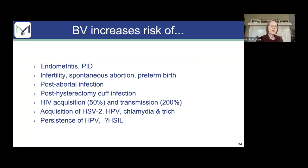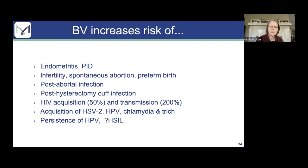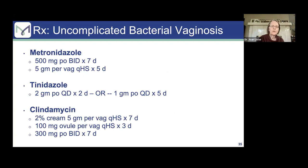BV is a nasty infection because it has a bad impact on lots of GYN conditions. It is associated with PID and endometritis. It causes increased infertility, spontaneous abortion, and preterm birth. It causes infections after abortion, after D&C, after hysterectomy, and it increases the risk of acquiring HIV — transmission is way up. The acquisition of herpes, HPV, chlamydia, and trich are all increased if someone has BV. Persistence of HPV and even high-grade dysplasia is increased with BV, so that's when you really do want to try to get rid of it.